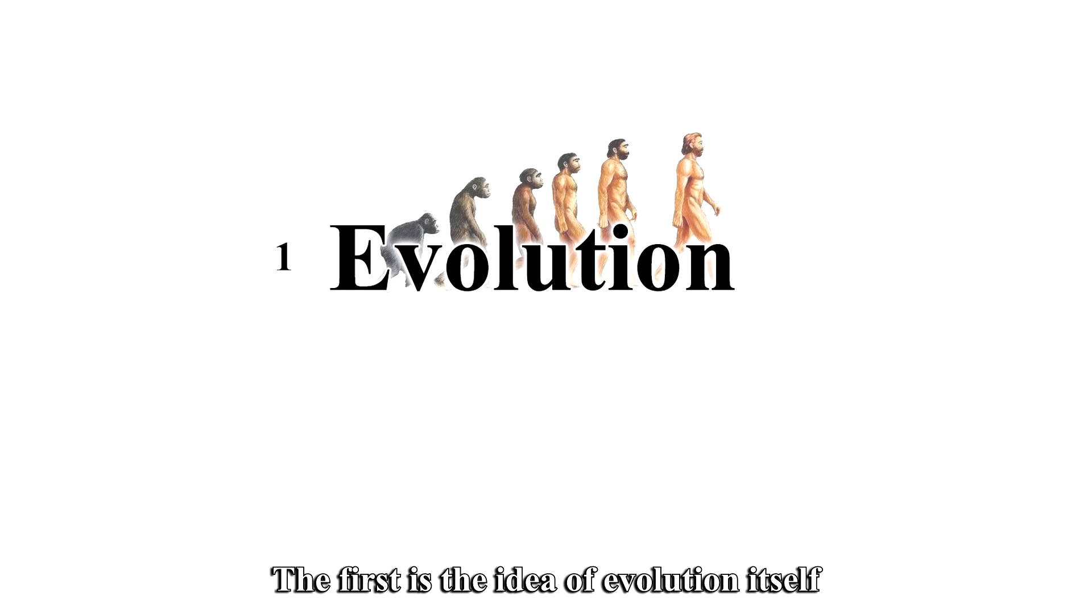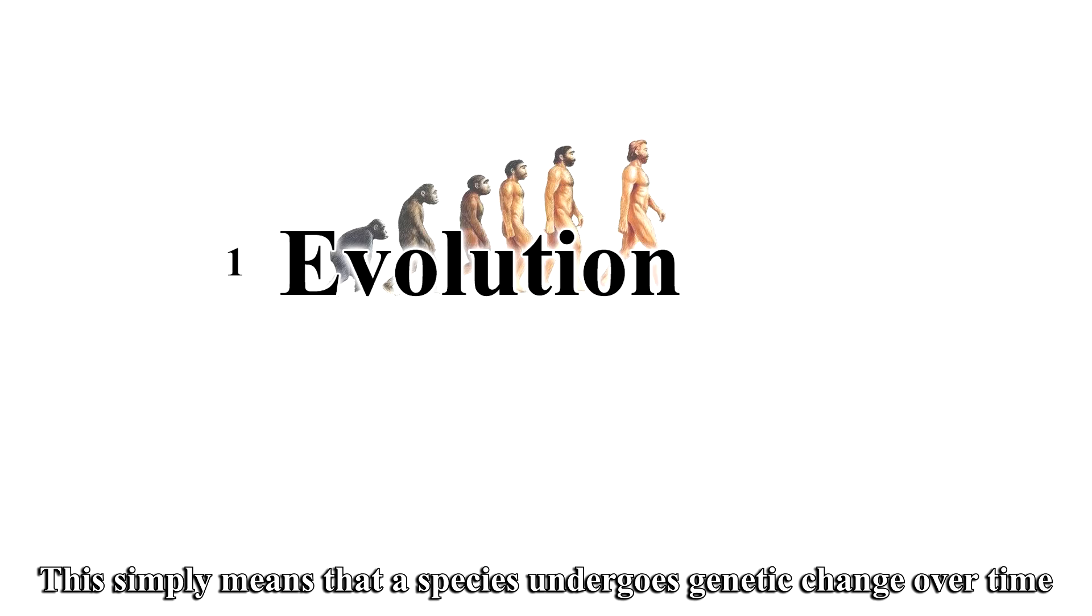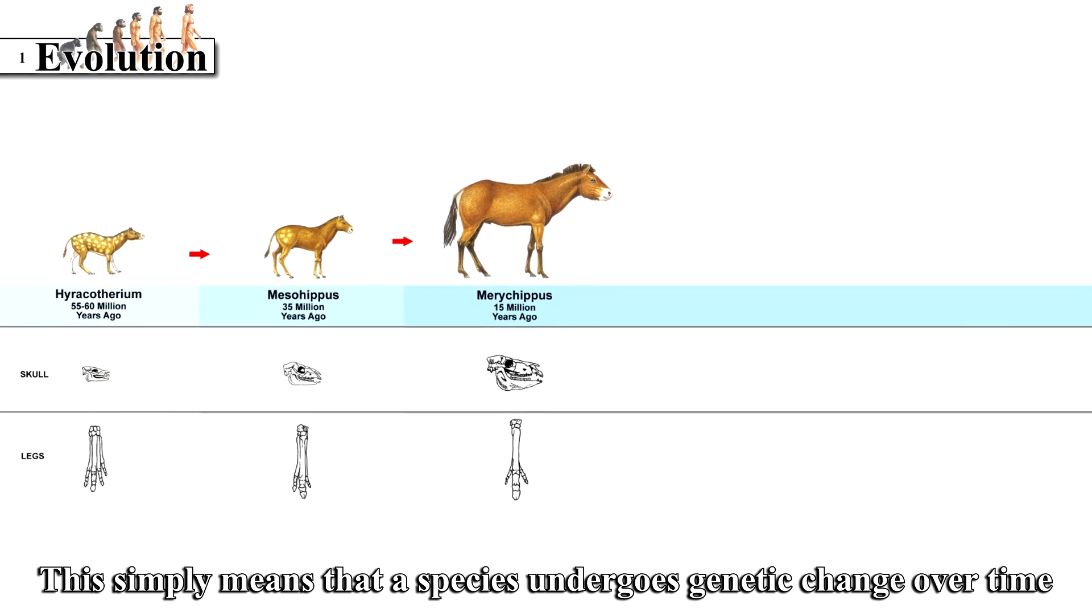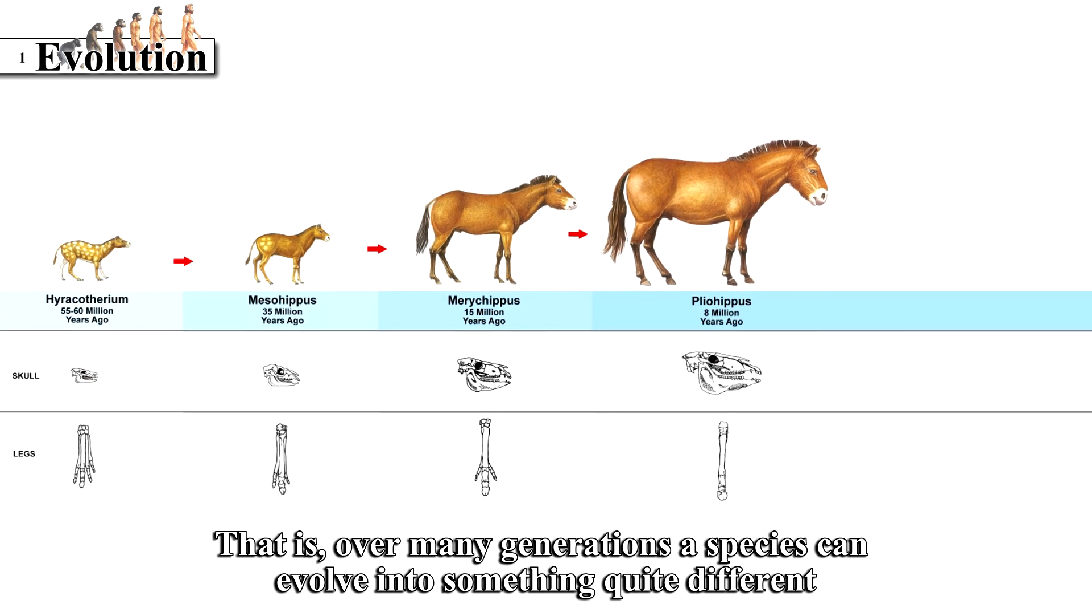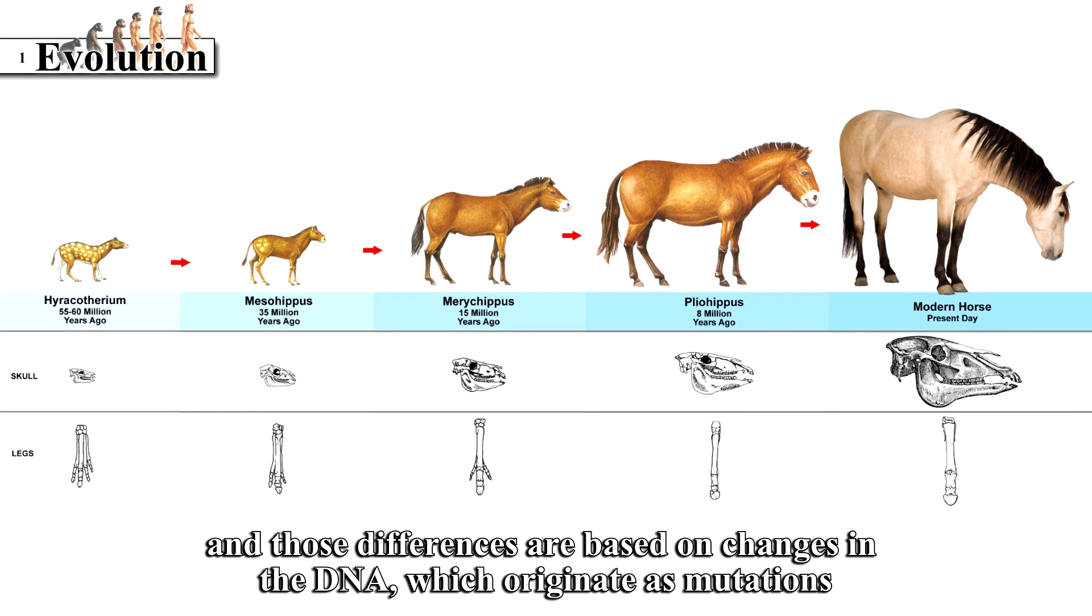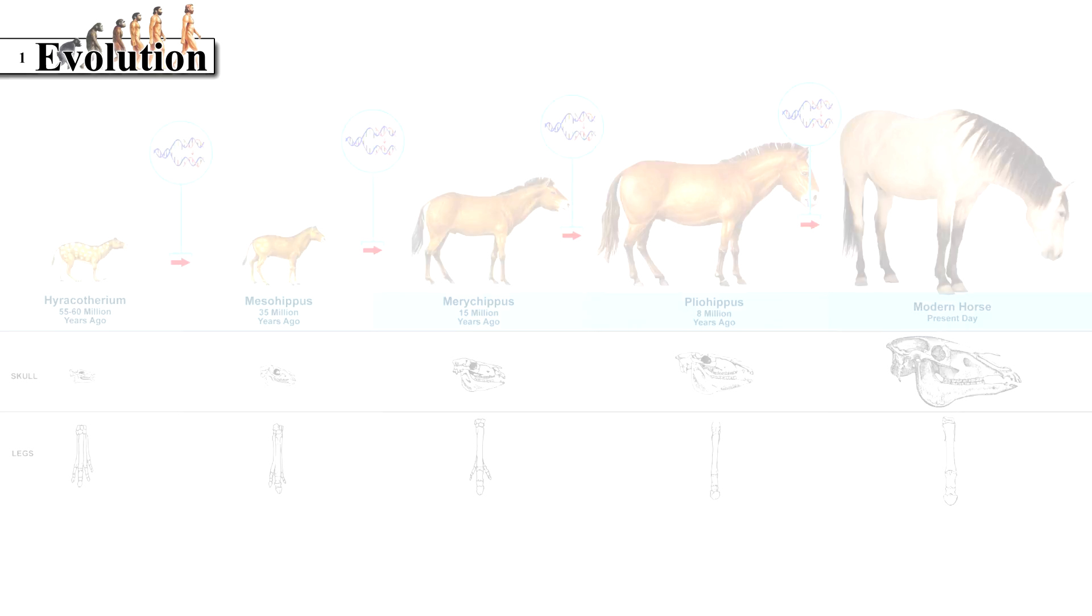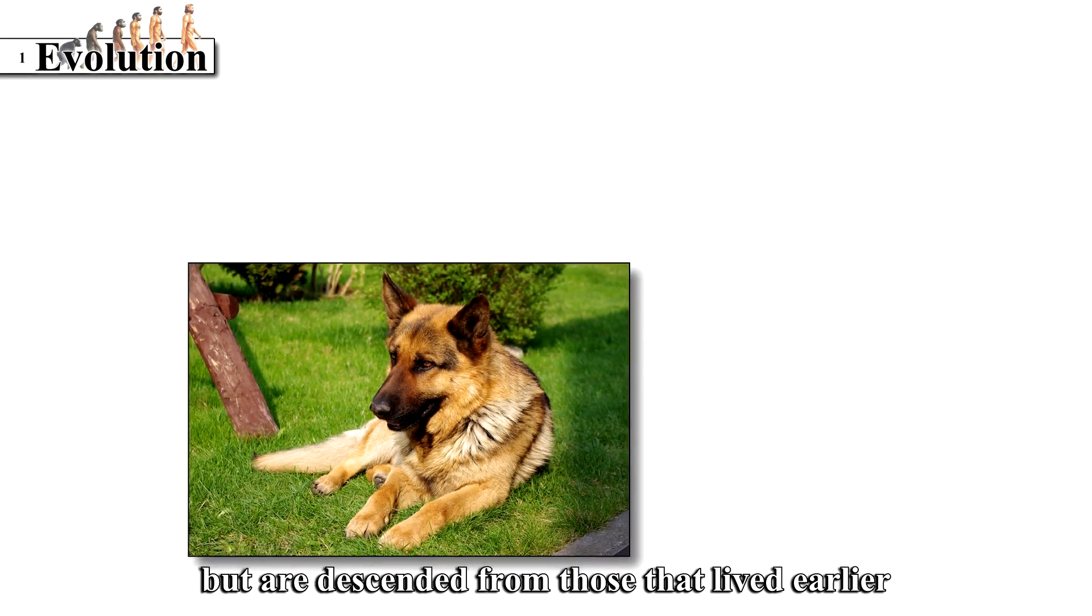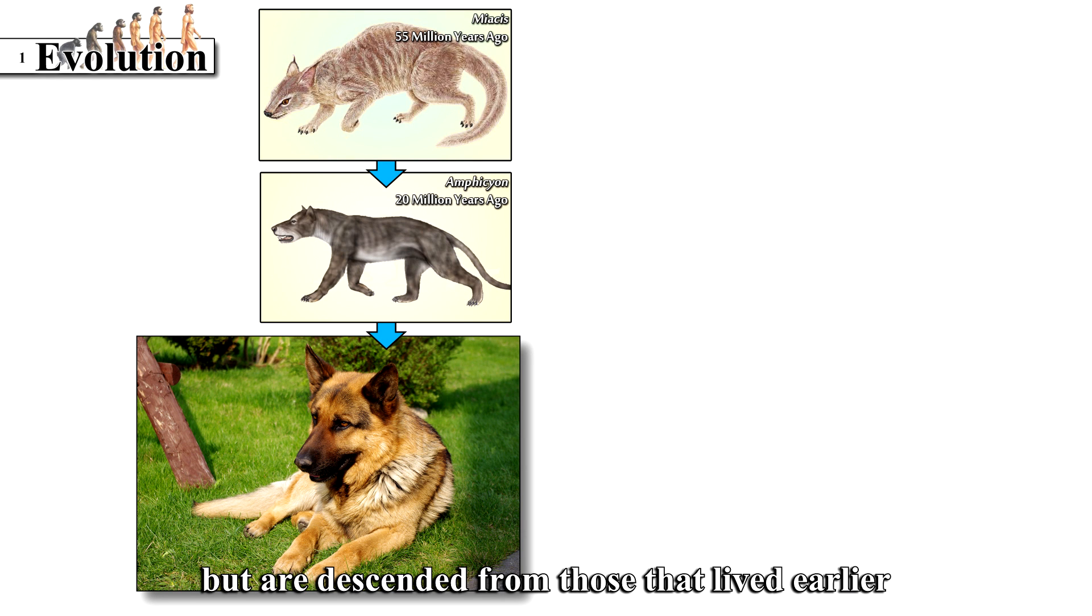The first is the idea of evolution itself. This simply means that a species undergoes genetic change over time. That is, over many generations, a species can evolve into something quite different, and those differences are based on changes in the DNA, which originate as mutations. The species of animals and plants living today weren't around in the past, but are descended from those that lived earlier.